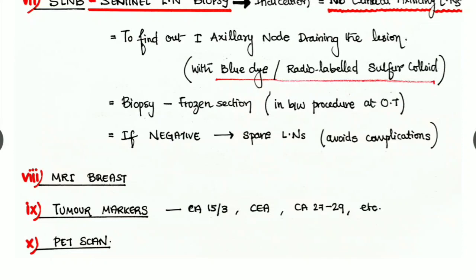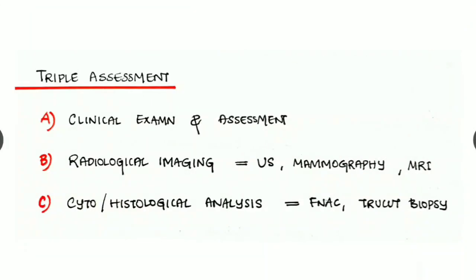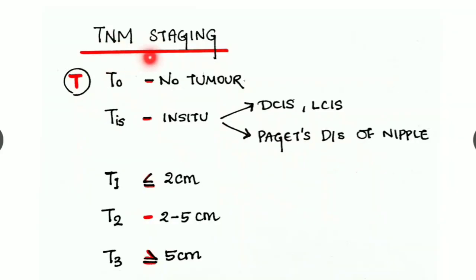Next we can do an MRI breast. We have to check the tumor markers like CA 15-3, CEA, CA 27-29, etc., and PET CT scan is a good option. What is triple assessment? It is very important. First one is clinical examination and assessment. Secondly, radiological imaging like ultrasonography, mammography, MRI, etc. And thirdly, the cytological or histological analysis like FNAC, true cut biopsy.